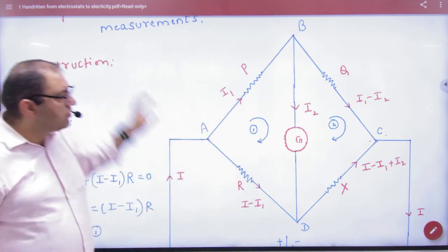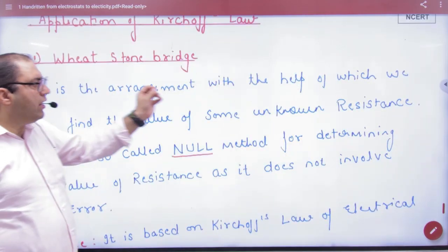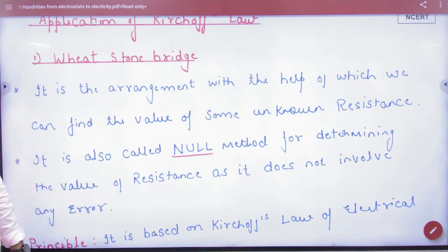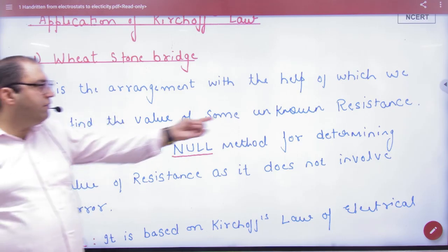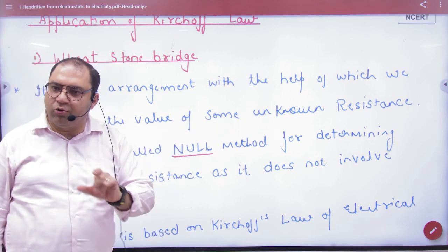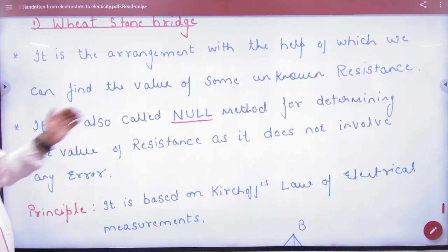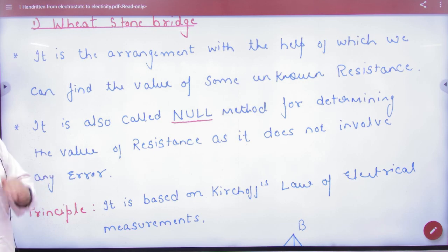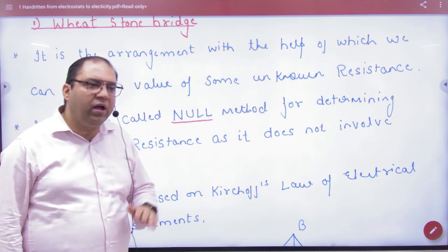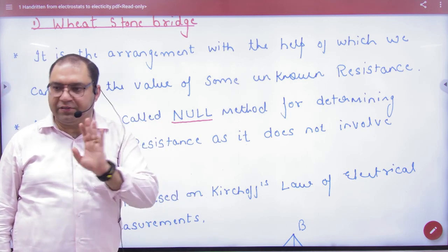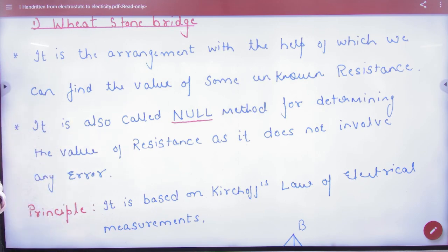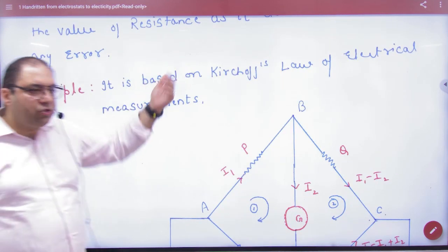So Wheatstone Bridge is an arrangement of resistances with the help of which we can find the value of some unknown resistance. And we call this the null method for determining resistance value as it does not involve error - it is based on Kirchhoff's law of electrical measurements. What principle is it based on? Kirchhoff's law.